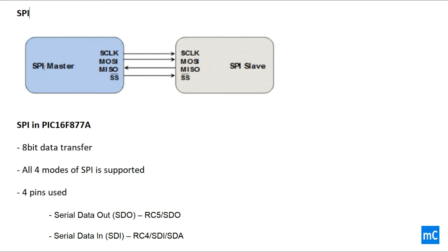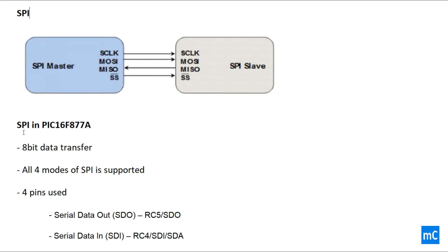Let me recall the basic SPI protocol. This protocol consists of a master and one or more slaves — it can have N number of slaves. Whenever the number of slaves increases, the slave select pins also increase, which is one disadvantage of SPI. SPI consists of four lines: serial clock, master out slave in, and master in slave out. Let's go into SPI in PIC16F877A.